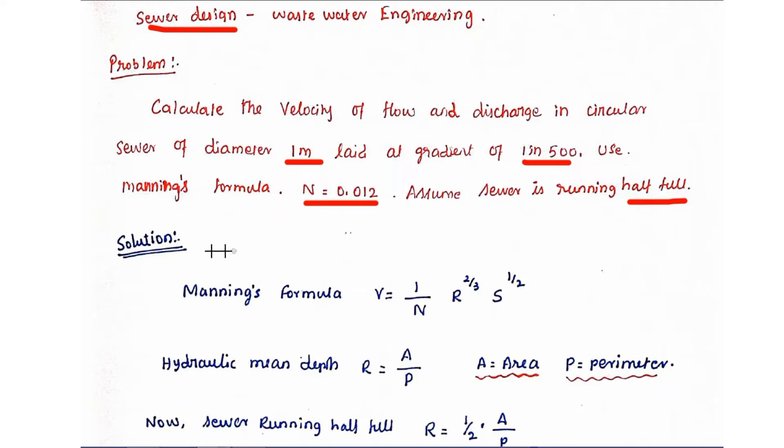Now the solution. Manning's formula is v equals 1 by n into r power 2 by 3 into s power 1 by 2. The hydraulic mean depth r equals a by p. We know the formula a by p, area by perimeter.